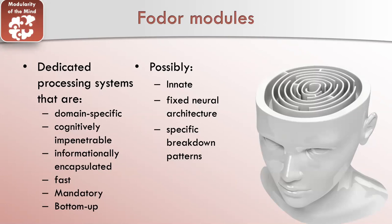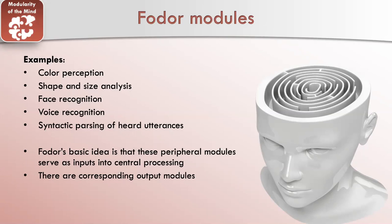Fodor has a lot of other properties that he thinks modules exhibit. These properties include being domain specific — being about one particular thing — informationally encapsulated, usually insensitive to information from other modules, fast, mandatory, and bottom-up. Possibly innate, possibly using fixed neural architecture, and possibly having specific breakdown patterns. Some examples include color perception, shape and size analysis, face recognition, voice recognition, and parsing language. We'll talk about how likely we expect all of those to be the case for all modules in the next video.